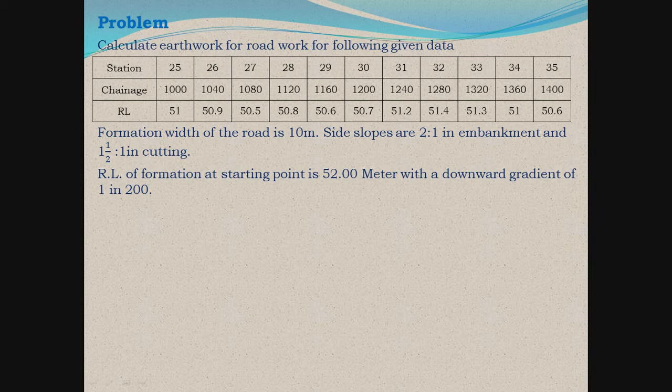One more important piece of data is given: the RL of formation at the starting point is 52 meters with a downward gradient of 1 in 200. A downward gradient means the slope of the road is towards downward, and hence the formation levels will go on reducing as the chainages increase from 1000 to 1400.